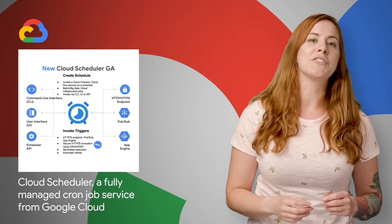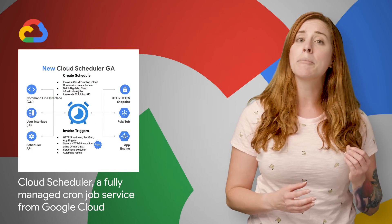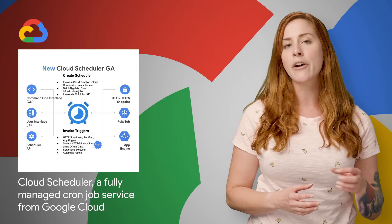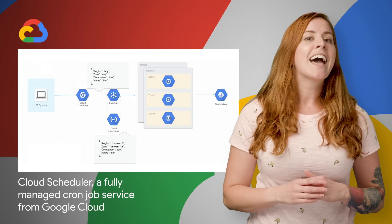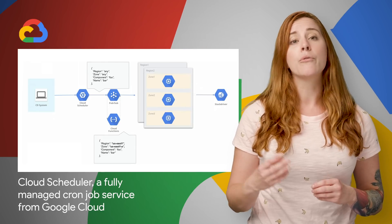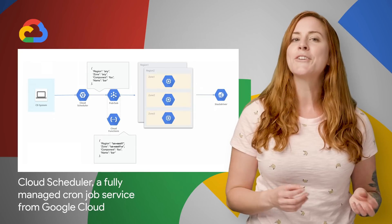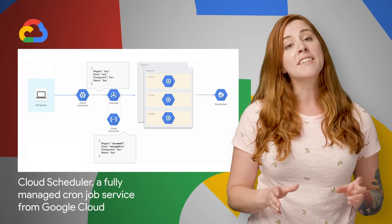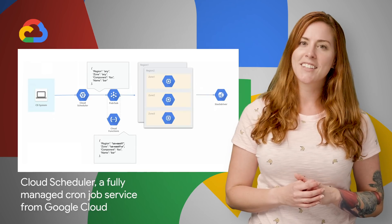Cloud Scheduler is a fully-managed cron job service that allows any application to invoke batch, big data, and cloud infrastructure operations. We recently added a new feature that allows you to trigger any service running anywhere — on-prem, on Google Cloud, or any third-party data center. For all the details and a link to the quick start, head on over to the post.